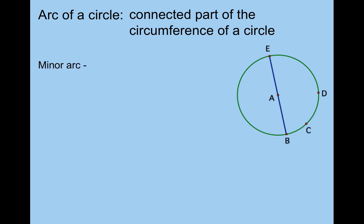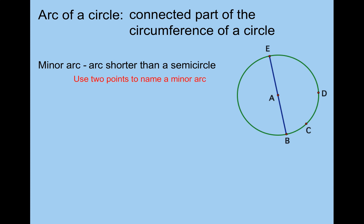There are a couple different types of arcs. The first type is a minor arc, and a minor arc is an arc which is shorter than a semicircle. We use two points to name a minor arc. So for example, arc BC is a minor arc — this curve is less than half a circle. We use an arc symbol and the two points at the end of the curve. That's how we name it.